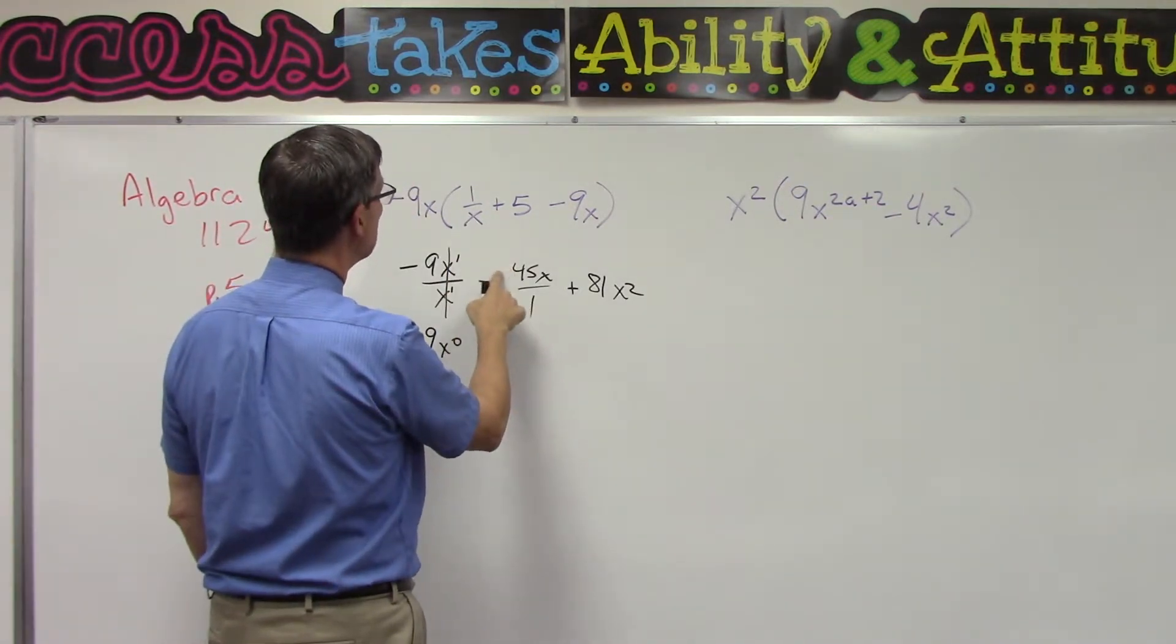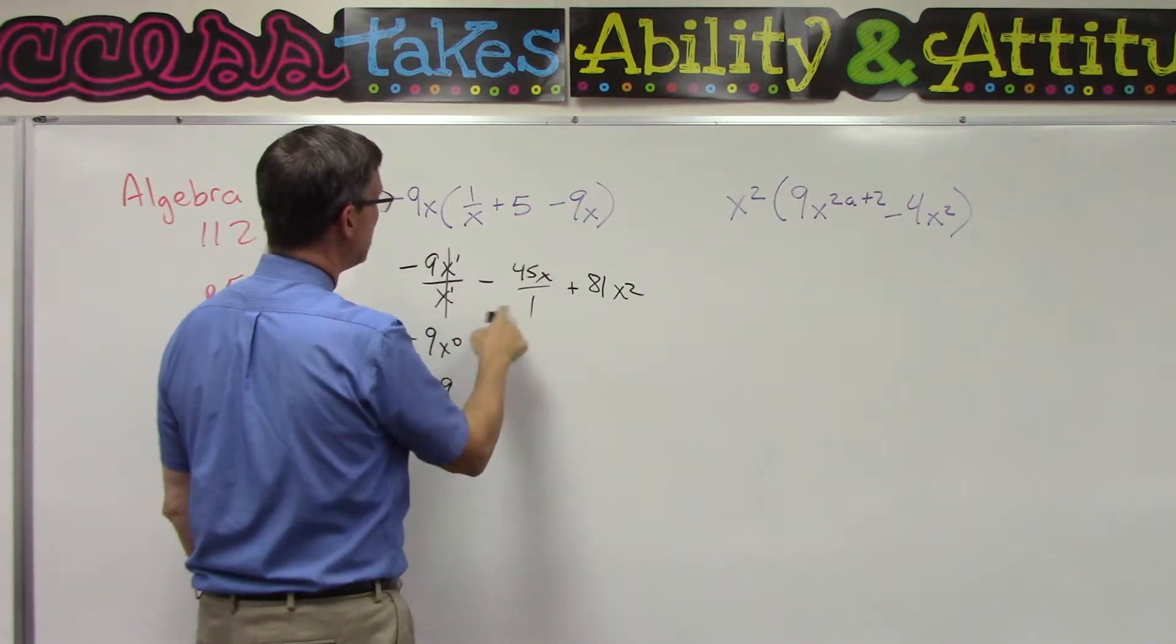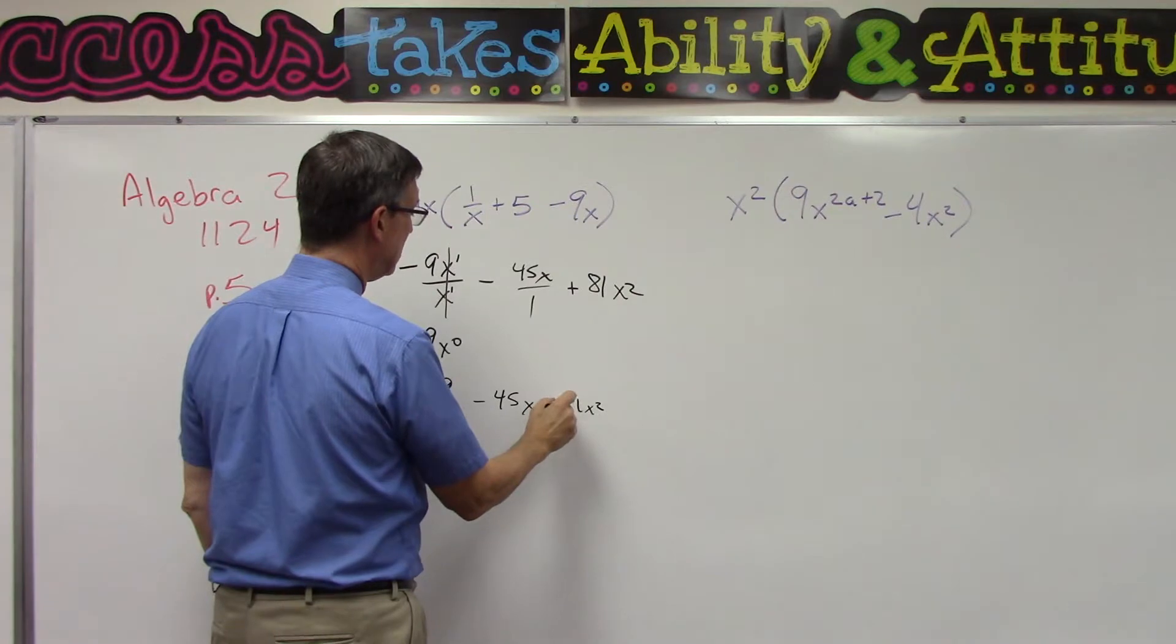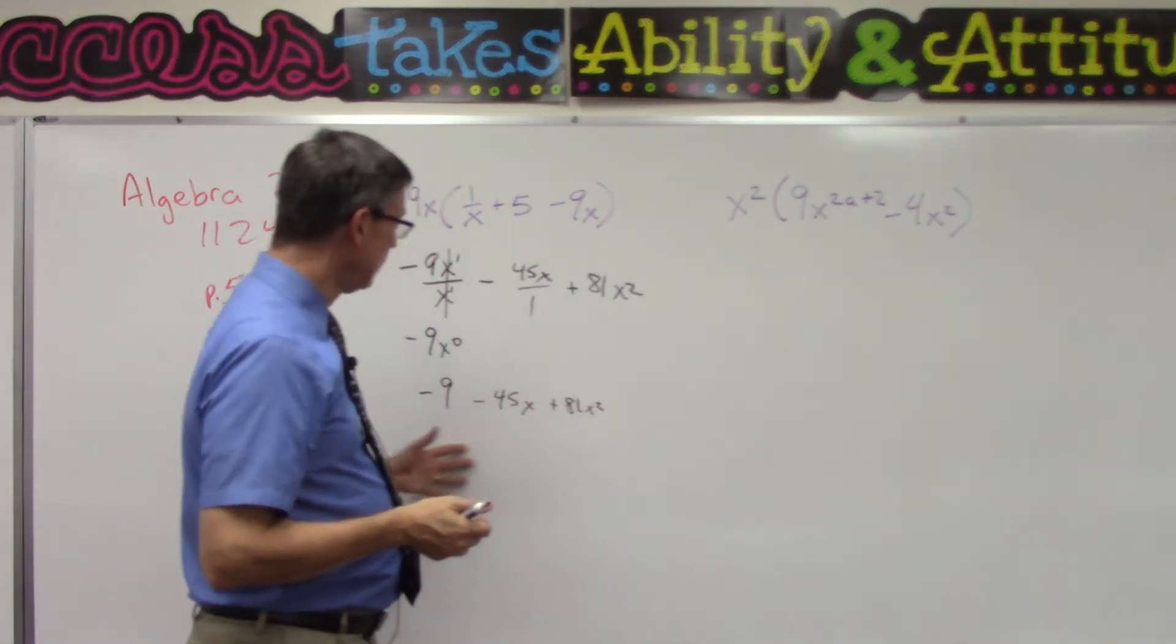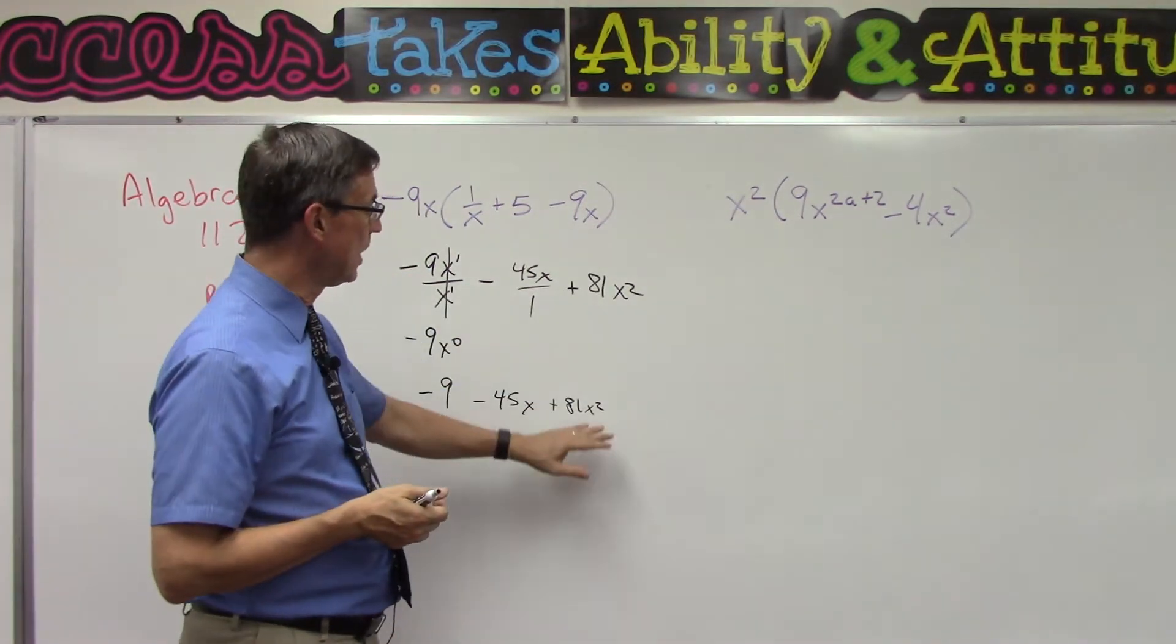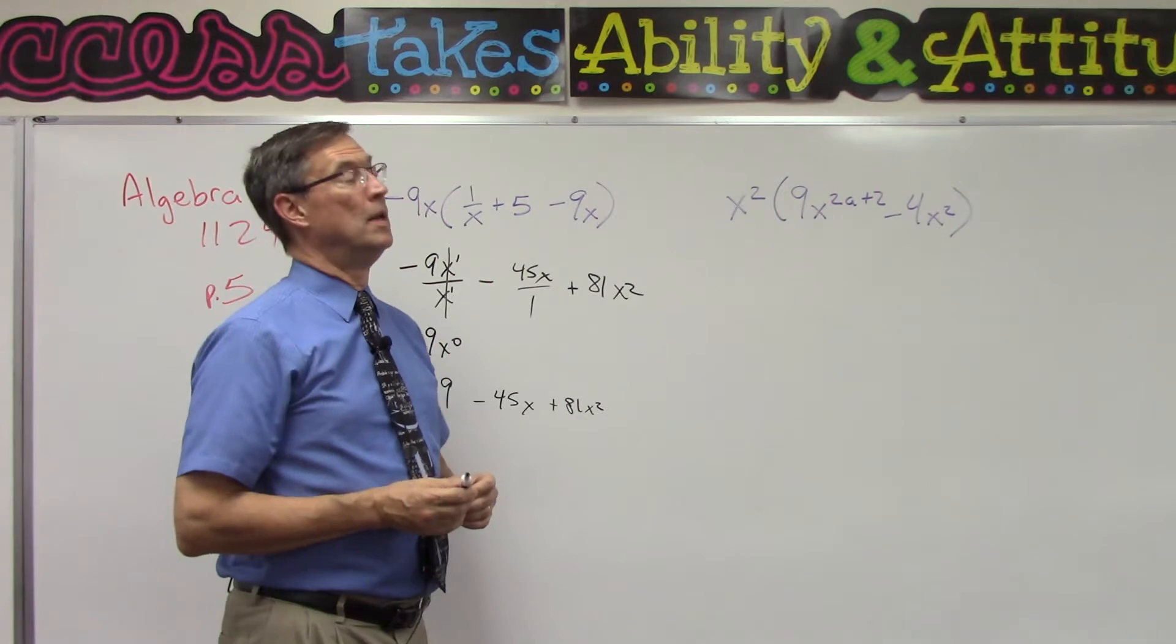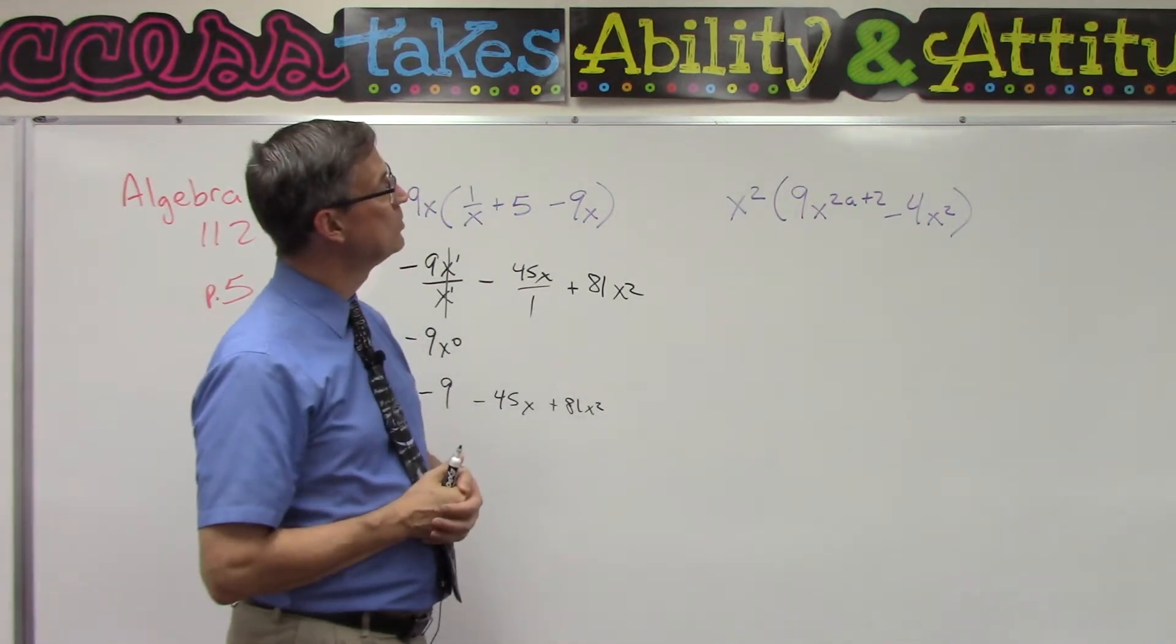Then I should not have made this negative and this negative because there's one negative here and this is positive. So we have negative 45x and then we had the 81x squared. Now when we look at this answer, it's not in the right order because we're supposed to do it in descending order of the variable. So we want to actually start with the x squared term, then go to x, and end up with the constant, the number that does not have an x. I'll let you finish that one.